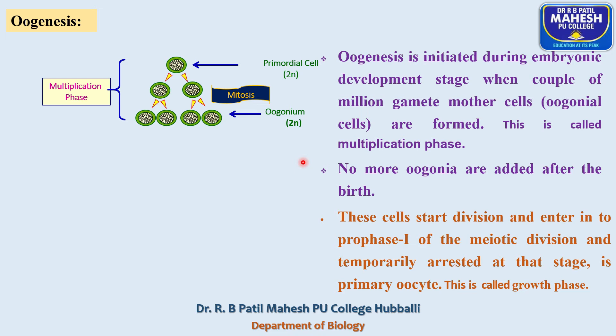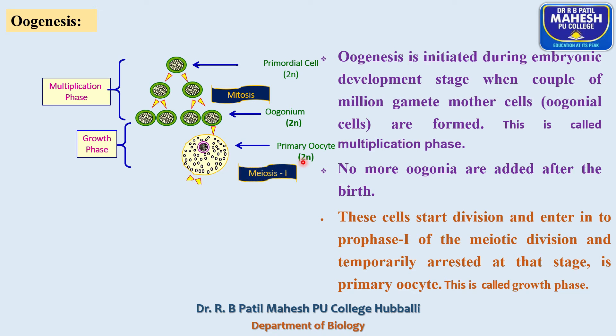Soon after birth, these oogonial cells enter into prophase one stage of meiotic division but are temporarily arrested at this stage. Such cells are called primary oocytes. After birth, these primary oocytes accumulate nutrients and become a highly enlarged, differentiated cell — the primary oocyte, which is diploid in nature. This phase is called the growth phase.